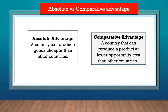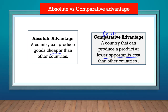Absolute advantage means that one country can produce goods cheaper than other countries — simply cheaper. Comparative advantage, on the other hand, is when one country is able to produce goods at a lower opportunity cost than other countries. Remember, opportunity cost means the cost of the next best option. So absolute advantage is producing goods cheaper, while comparative — also sometimes called relative — advantage is producing goods at a cheaper opportunity cost than other countries.